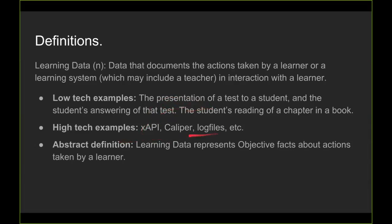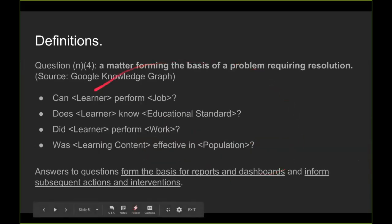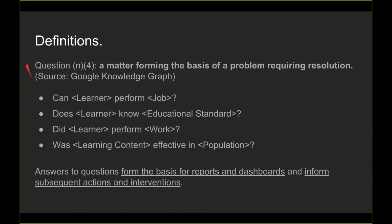High-tech examples are XAPI and Caliper — the things we do in e-learning. The general abstract definition is that learning data is intended to represent objective facts about actions taken by a learner or actions done to a learner. The goal of pretty much any analytic system is to answer a question — a question being defined as the matter forming the basis of a problem requiring resolution. We have a question, we need an answer, and we have data sitting at the bottom that in theory can be used to answer it.